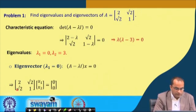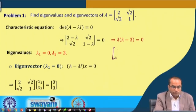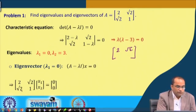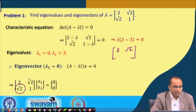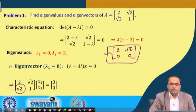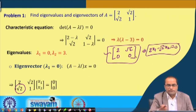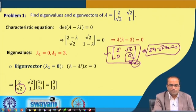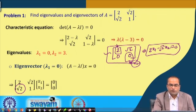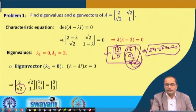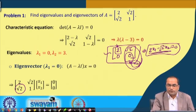To find this, the first row is 2 and square root 2, and the second row is square root 2 and 1. We can divide the first row by square root 2 to obtain the row reduced echelon form, resulting in the second row becoming zero. The first equation gives 2x₁ plus square root 2 times x₂ equals zero, and we have one free variable.